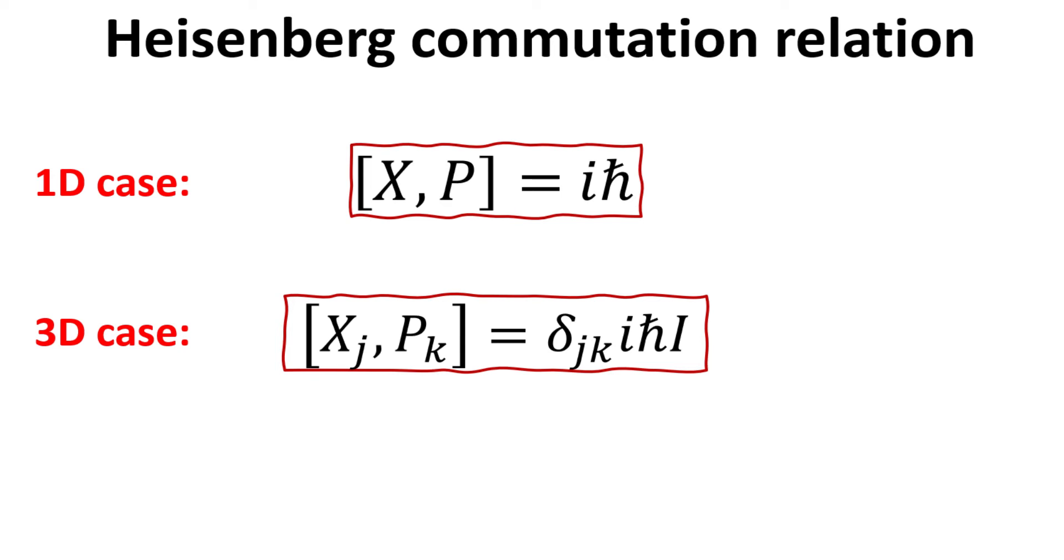the commutators for the case when j not equals to k will simply be zero, as they have to commute. Otherwise, if j equals to k, then the result will be the same as the 1D case. This fact is accounted for by the Kronecker delta function.